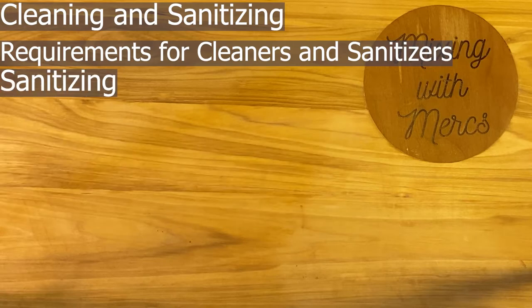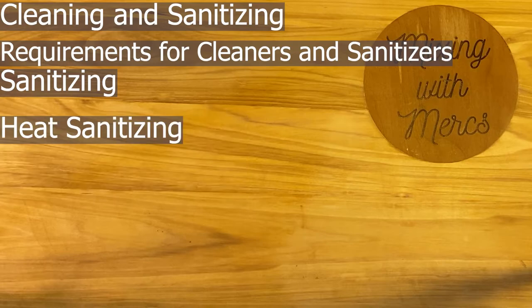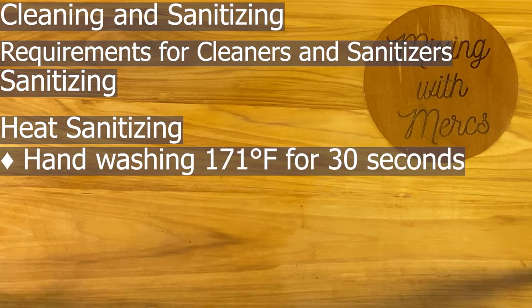For sanitizing, the requirements are a little different because there are two types: heat sanitizing, which uses heat to kill bacteria, and chemical sanitizing, which uses chemicals. For heat sanitizing, you're generally only doing this with dishes — you're not going to be heat sanitizing countertops or surfaces because it's not really possible.